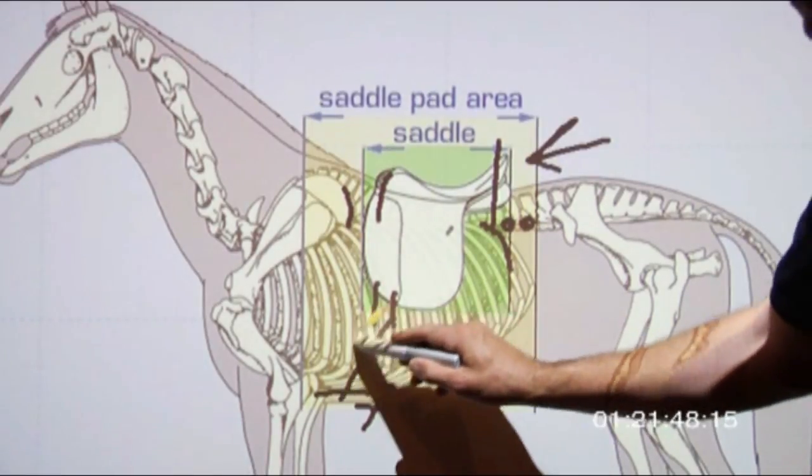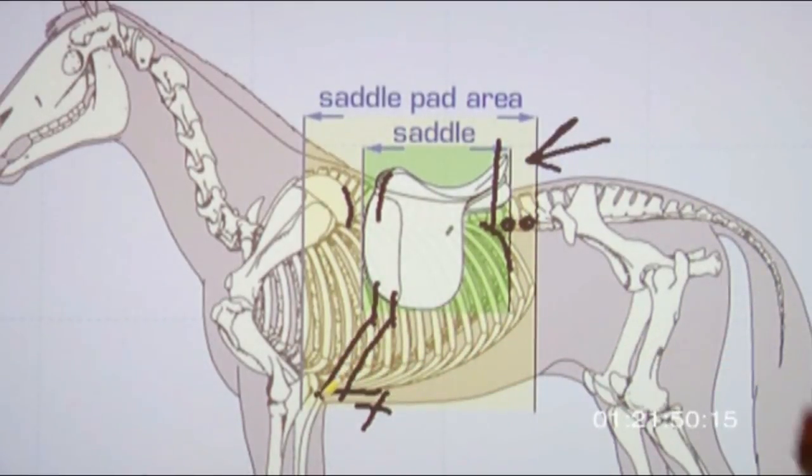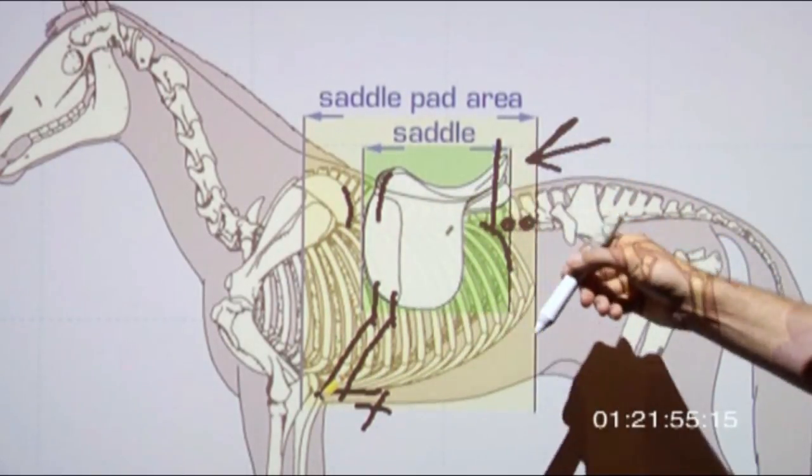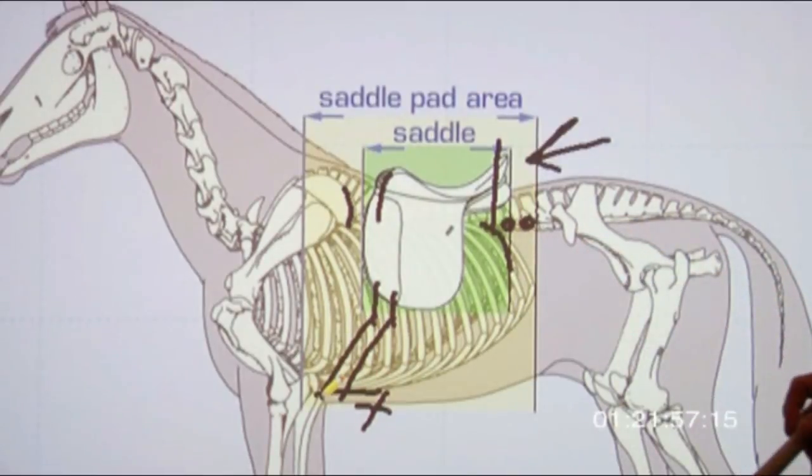And now all the hairline is moved forward and all the hair follicles get irritated. Then we start having a completely different saddle fitting problem - skin irritation, loose girth, moving saddle - and one thing leads to another.